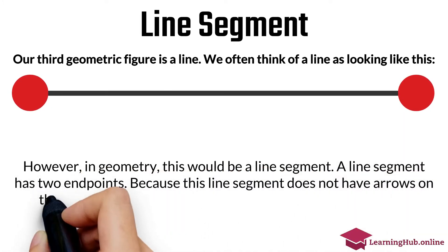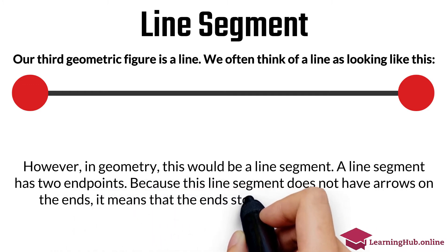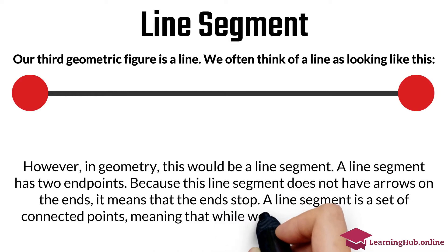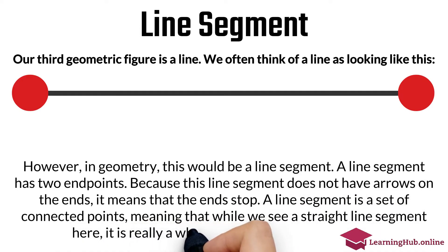Because this line does not have arrows on the ends, it means that the ends stop. A line segment is a set of connected points, meaning that while we see a straight line segment here, it is really a whole bunch of connected points.